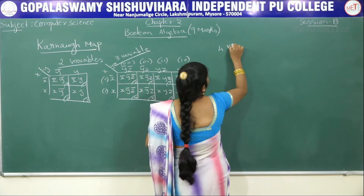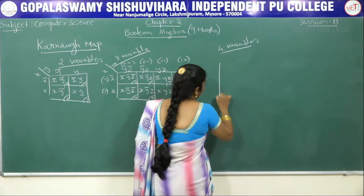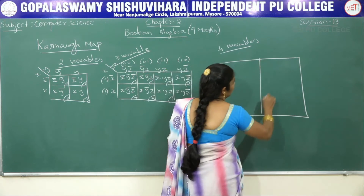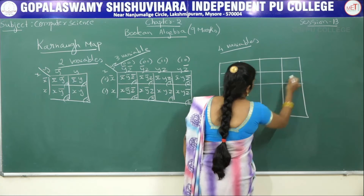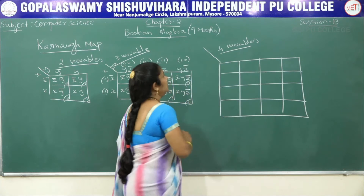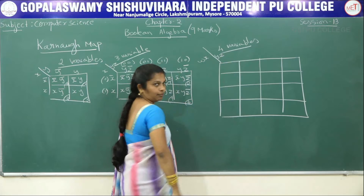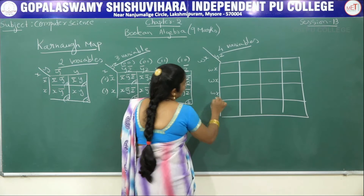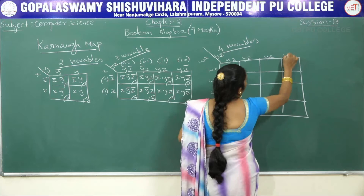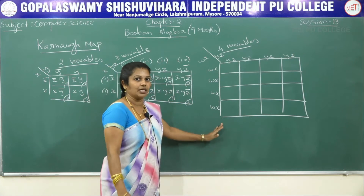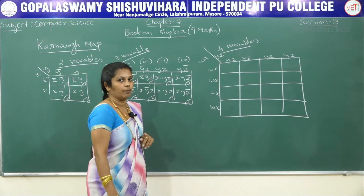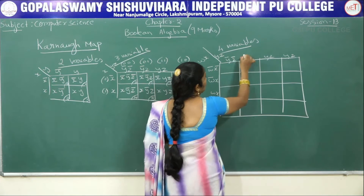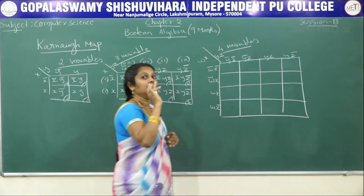If you have four variables, then 2 to the power of 4 gives 16 cells. Write W and X on the row side, Y and Z on the column side. Using the blind method: first three are bar, last one is complemented. The cell values are: W-bar X-bar Y-bar Z-bar, W-bar X-bar Y-bar Z, W-bar X-bar Y Z, W-bar X-bar Y Z-bar, then W-bar X Y-bar Z-bar, W-bar X Y-bar Z, W-bar X Y Z, W-bar X Y Z-bar.